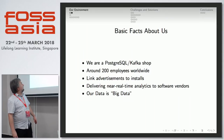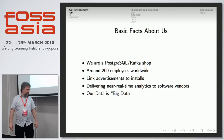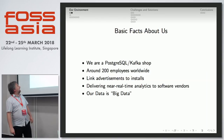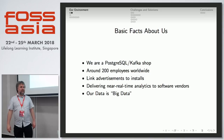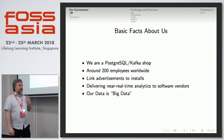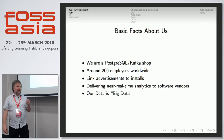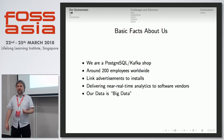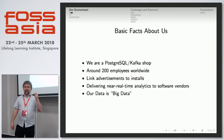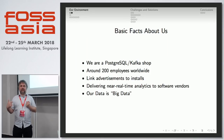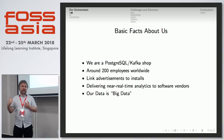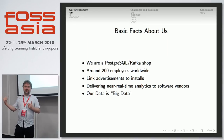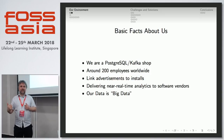Some basic facts about us: we are a PostgreSQL, Kafka, Go, and C shop. We have about 200 employees worldwide. We link advertisements to installs and do very close to real-time analytics of user traffic data. Right now, on average, there's a five-minute window between when an event comes into our servers and when it shows up on the dashboard. This is despite the fact that we have 100,000 to 200,000 requests per second on average — 100,000 during downtime and 300,000 to 400,000 during high-volume peak times.